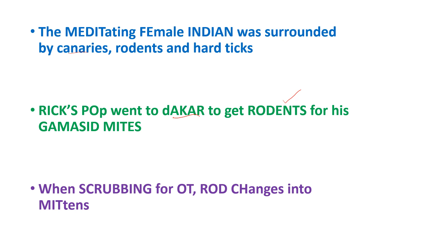And lastly, scrub typhus: 'When scrubbing for OT, rod changes into mittens' — caused by Orientia tsutsugamushi, rodents are the reservoir, and the vector is chiggers of trombiculid mites. I hope this helps you. Do write in the comment box how you found these mnemonics.